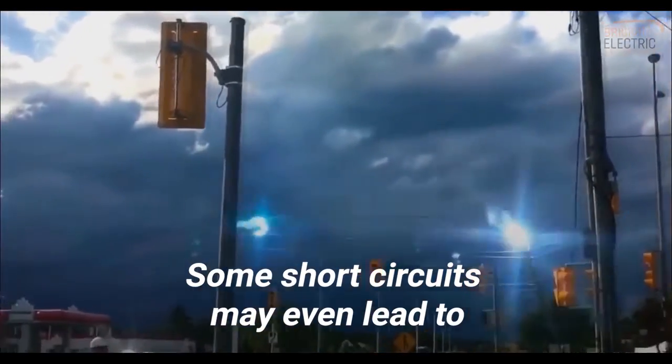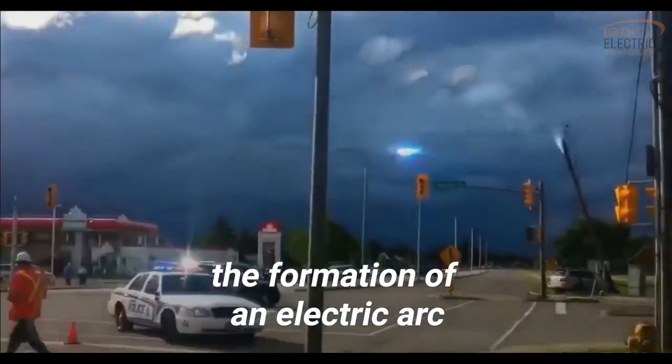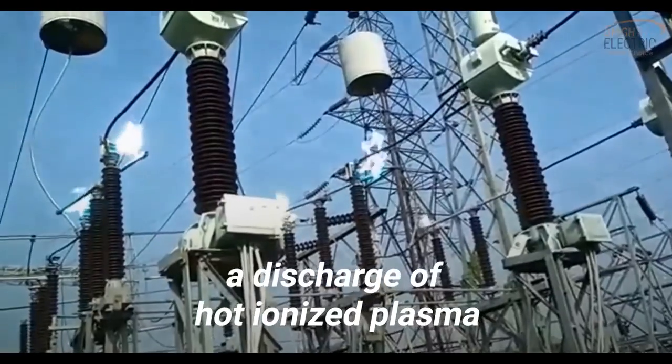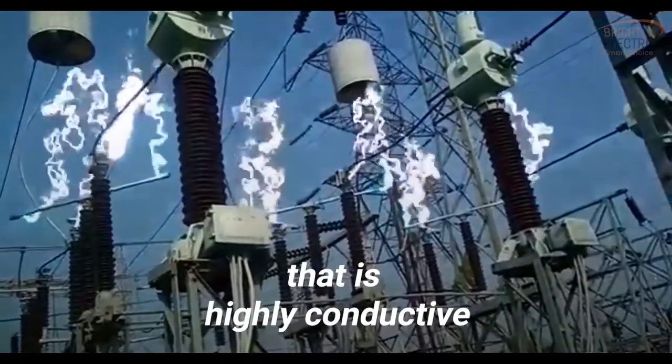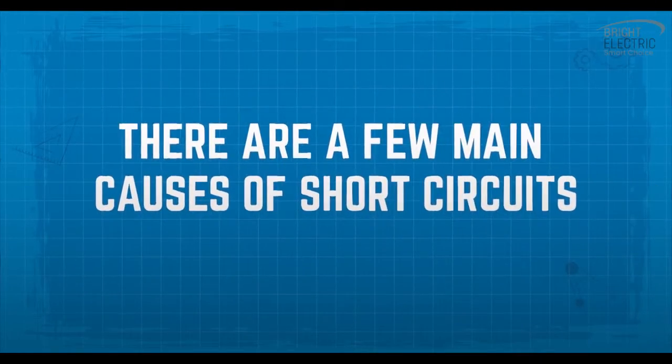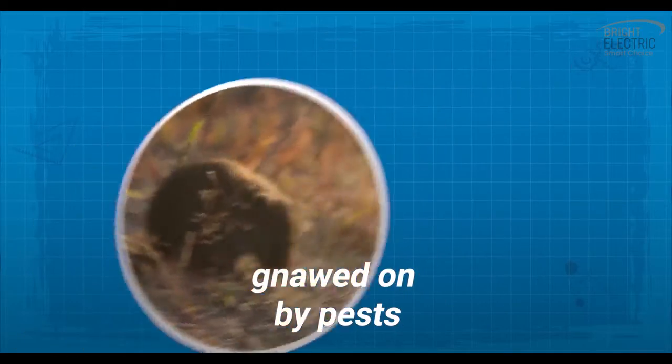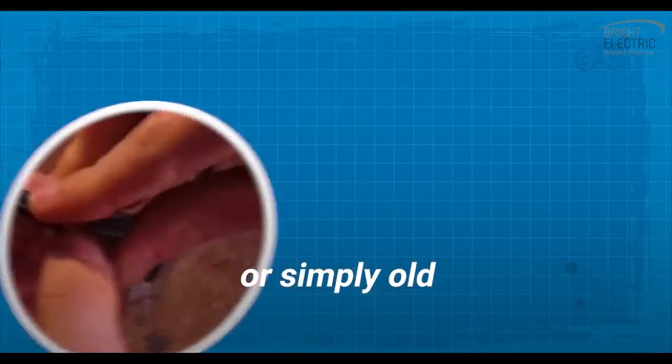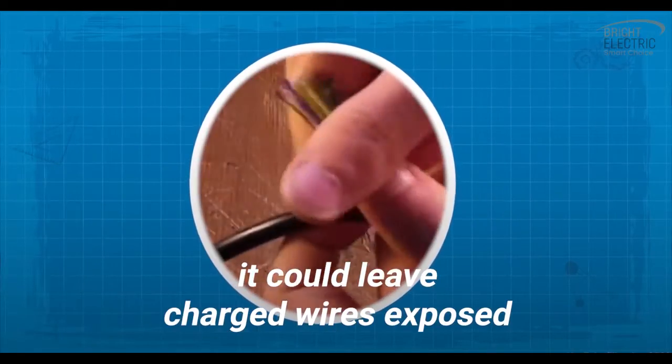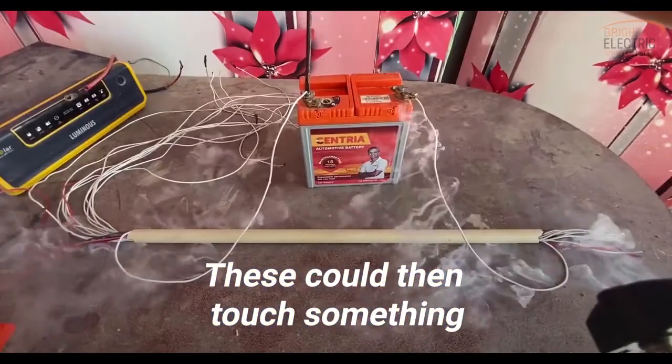Some short circuits may even lead to the formation of an electric arc - a discharge of hot ionized plasma that is highly conductive. There are a few main causes of short circuits. If the insulation around wiring is damaged, nibbled on by pests, or simply old, it could leave charged wires exposed. These could then touch something, causing a short circuit.